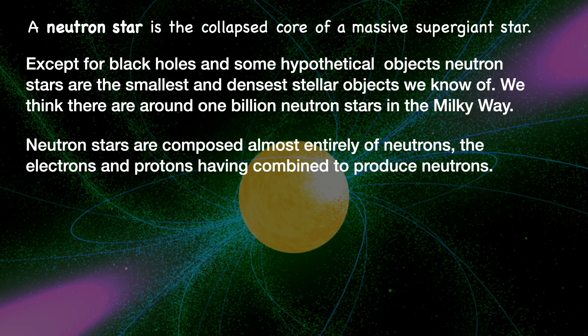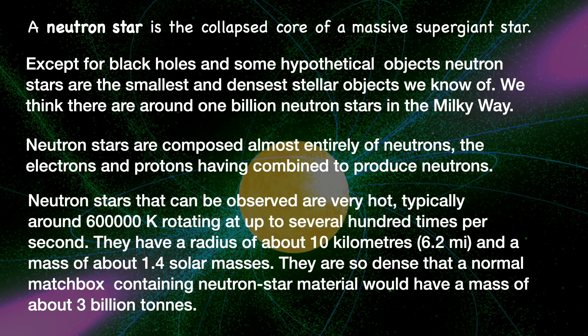All packed together. Those that we can observe are very hot, spinning extremely quickly, and with a diameter of around about 10 kilometers, but with a mass greater than that of our Sun. As we've calculated, a matchbox full of neutron star material would weigh several billion tons.